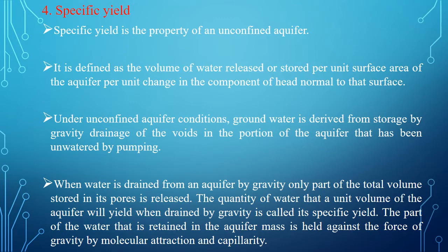The next important property is the specific yield, which is a property of unconfined aquifer only. It is defined as the volume of water released or stored per unit surface area of the aquifer per unit change in the component of head normal to that surface. Under unconfined aquifer conditions, groundwater is derived from storage by gravity drainage of the soils in the portion of the aquifer that has been unwatered by pumping. When water is drained from an aquifer by gravity, only part of the total volume stored in its pores is released. The quantity of water that a unit volume of the aquifer will yield when drained by gravity is called specific yield. The part of water that is retained in the aquifer mass is held against the force of gravity by molecular attraction and capillarity.